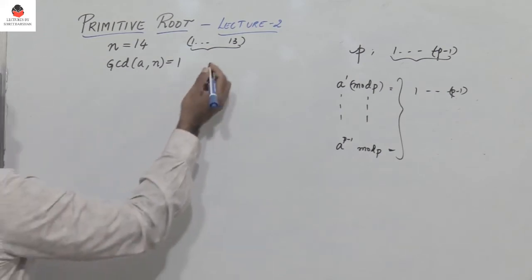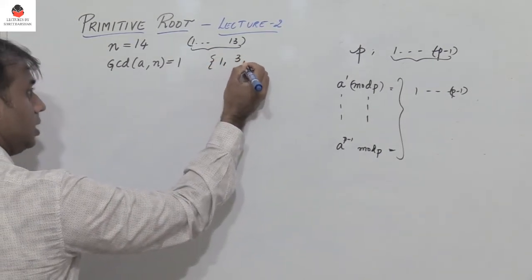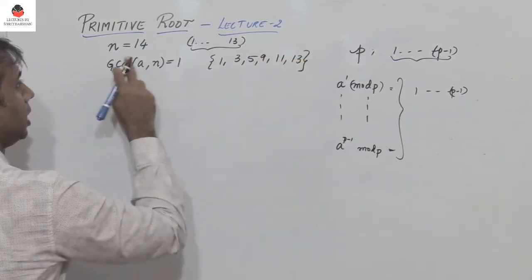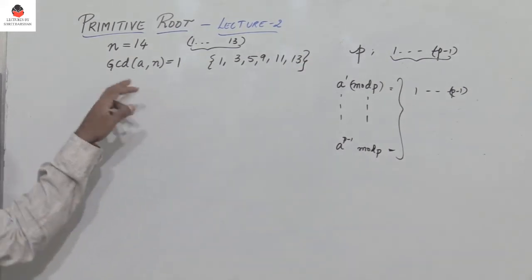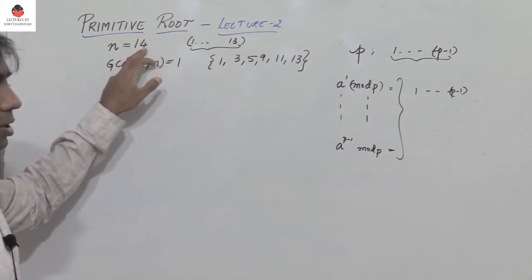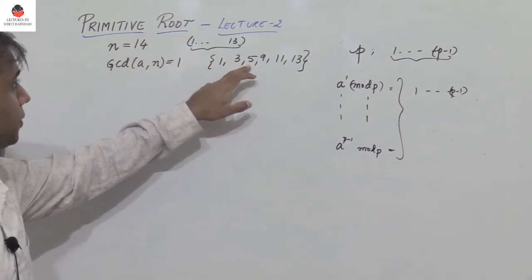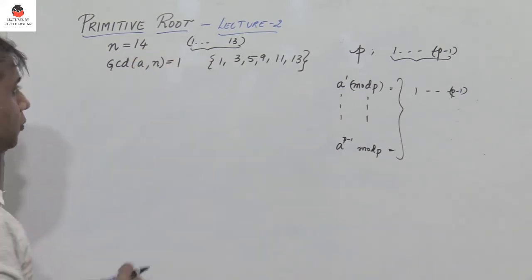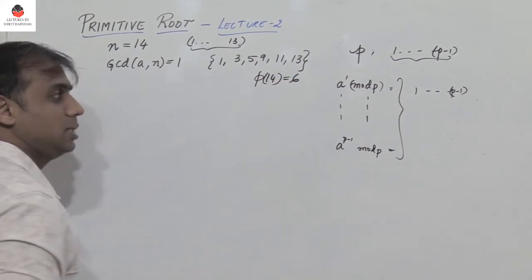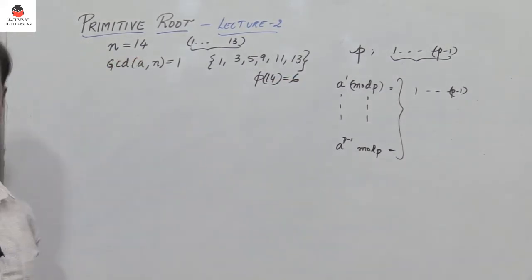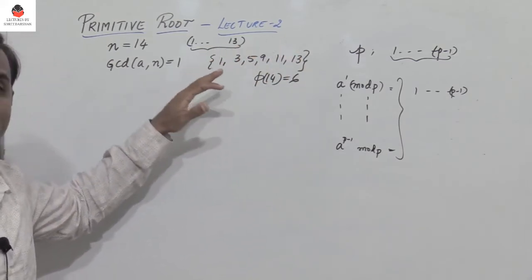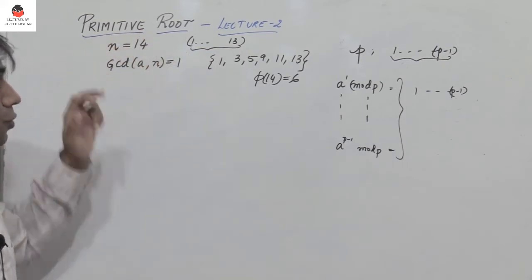We observe that the numbers 1, 3, 5, 9, 11, and 13 are relatively prime to 14. You can check for yourself: the GCD of 1 comma 14 is 1, GCD of 3 comma 14 is 1, similarly GCD of 5 comma 14 is 1, and so on. So therefore phi of 14 is equal to 6 — that means there are 6 numbers which are relatively prime to 14. Now among these 6 numbers we have to identify which is the primitive root of 14.